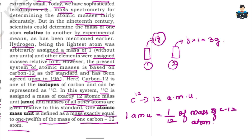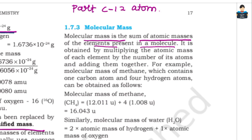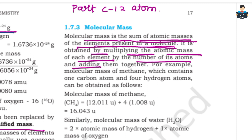Molecular mass is the sum of the atomic masses of the elements present in a molecule. It is obtained by multiplying the atomic mass of each element by the number of its atoms, and then adding them together.